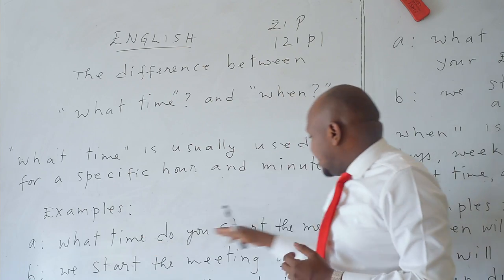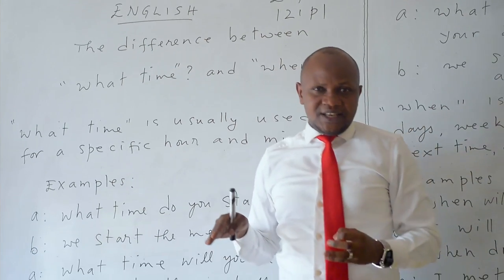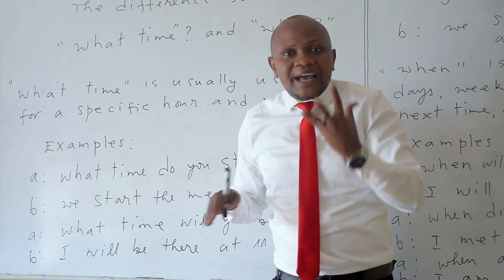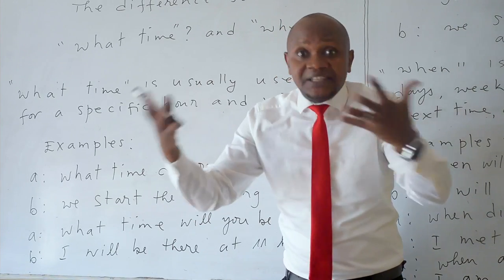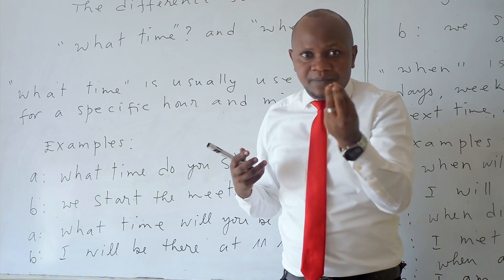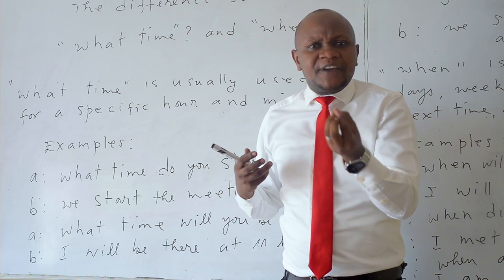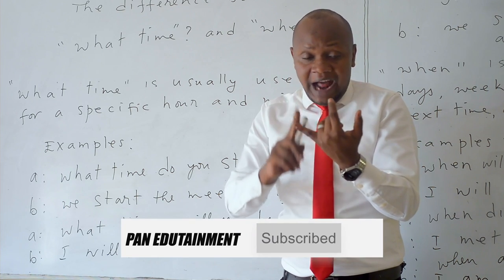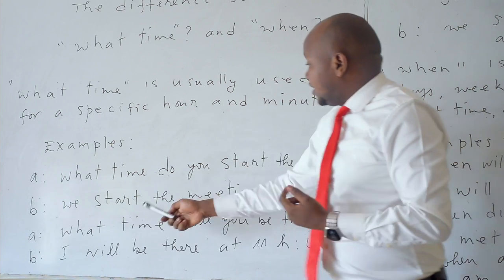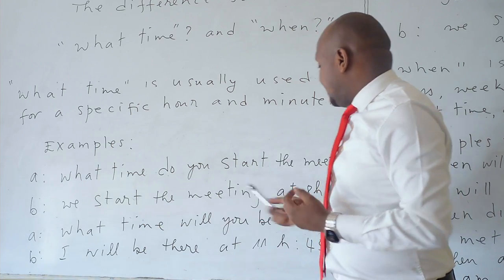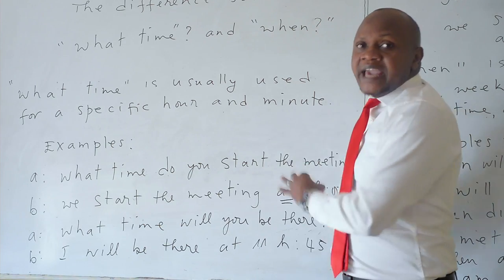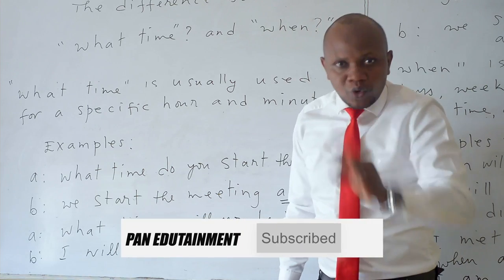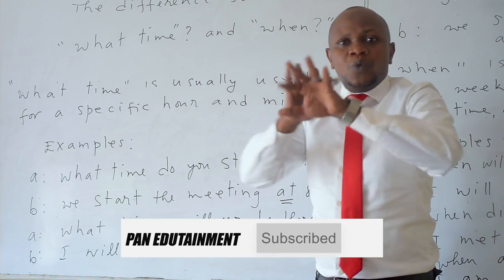What time is usually used for a specific hour and minute. For example, what time do you start the meeting? What time do you start the meeting? That is what time. I want you to be specific, to tell me the time, hour, to tell me hour or minute. Here you will say, we start the meeting at 8 a.m.